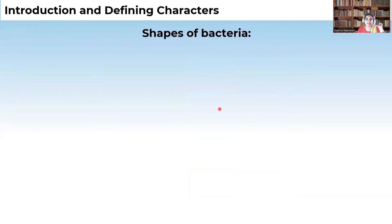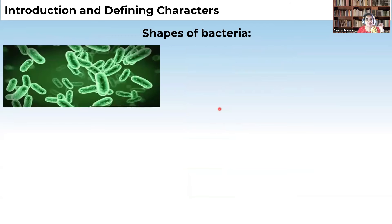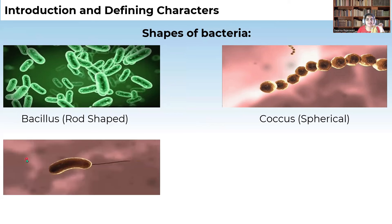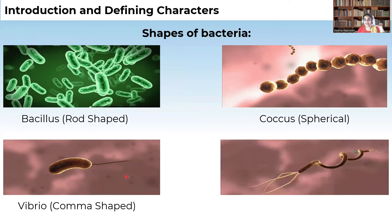Let us see the shapes of bacteria, which come under morphological characters. Some bacteria are rod-shaped — we give the name bacilli to rod-shaped bacteria. Some are round-shaped, called cocci. Some organisms are slightly bent, like a comma — these comma-shaped bacteria are called vibrio. And some organisms are fully spirally coiled, which we call spirillum. We give names to bacteria depending on their shapes.